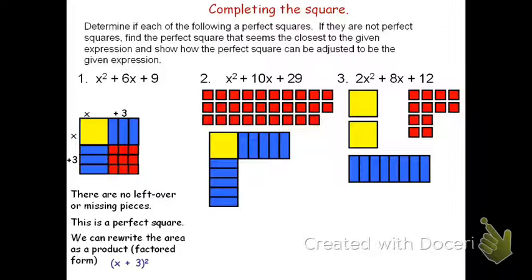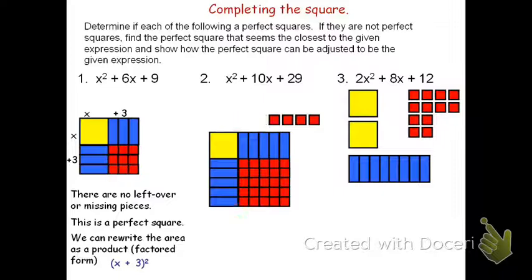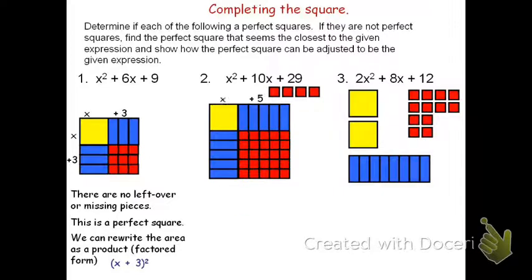To fill in the missing pieces, we see that we have an area that is 5 by 5 wide. That will take 25 of the squares to fill in. We can make a complete square, but we have leftover pieces. The dimensions of the square are x + 5 by x + 5. That would be the quantity (x + 5)².